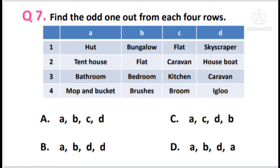Question 7. Find the odd one out from each of the four rows. First row: A hut, B bungalow, C flat, D skyscraper. Second row: A tent, B flat, C caravan, D houseboat. Third row: A bathroom, B bedroom, C kitchen, D caravan. Fourth row: A mop and bucket, B brushes, C broom, D igloo.